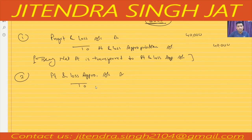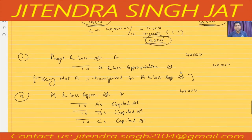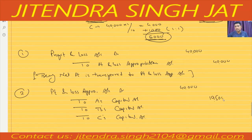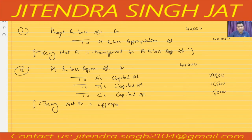The next entry for distribution: Profit and Loss Appropriation Account Dr. to A's Capital Account, to B's Capital Account, and to C's Capital Account — ₹19,500 to A, ₹15,500 to B, and ₹5,000 to C — being net profit appropriated to partners. I hope this question is clear to everyone.